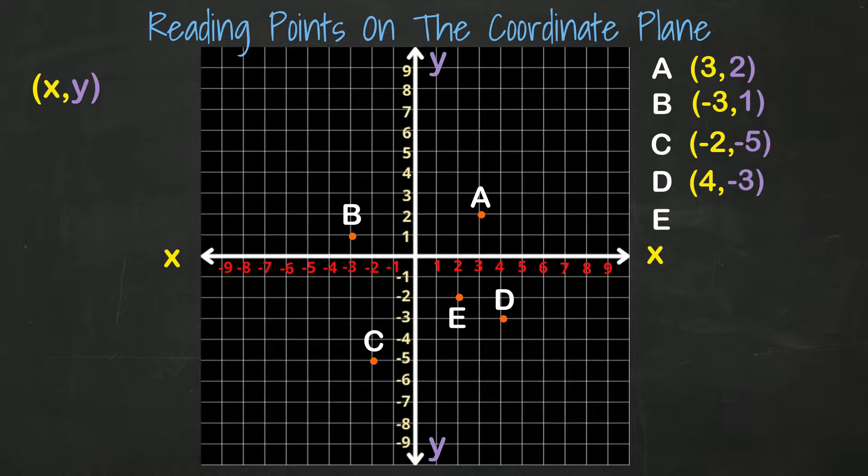Let's look at the last one. Find the coordinates for point E. We see we need to move two spaces to the right. Then we need to move two spaces down. The coordinates for point E are two and negative two.